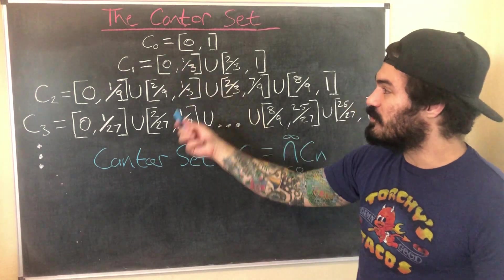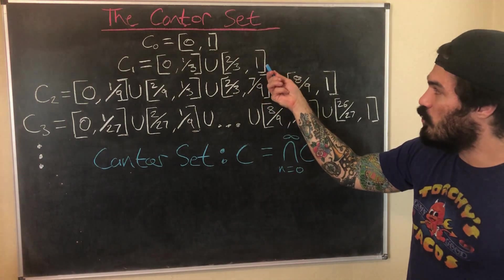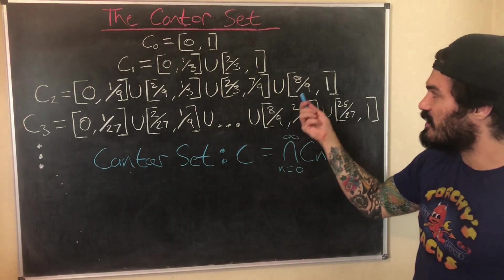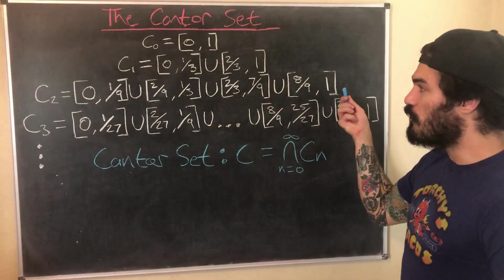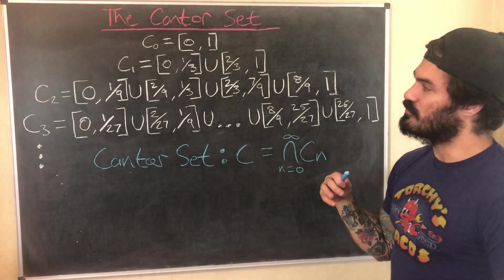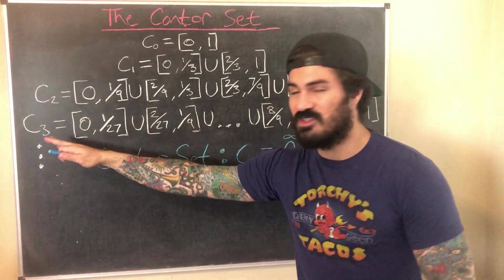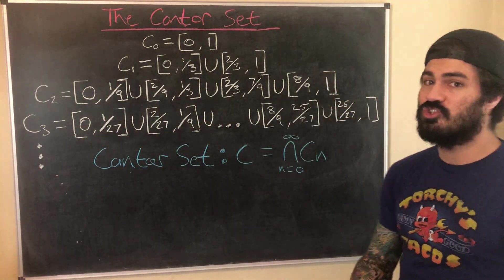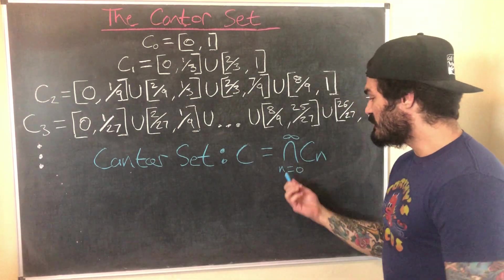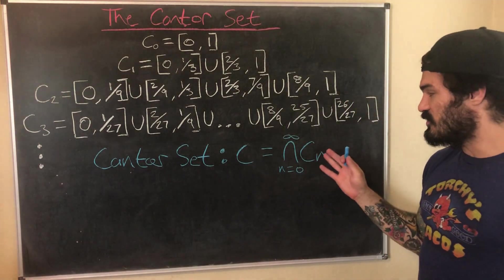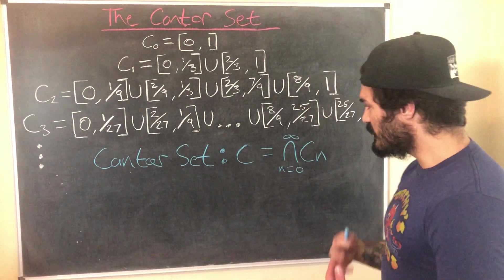Our C1 is the union of those two closed disjoint intervals. We then repeat this process on each sub-interval, removing open middle thirds to get C2 — the union of four closed disjoint intervals — then C3 with eight, and so on. The Cantor set is defined as the infinite intersection of all these sets.